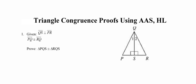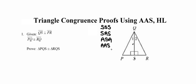Just a brief recap of our different methods for proving triangles congruent: we can prove triangles congruent by SSS (side-side-side), SAS (side-angle-side), ASA (angle-side-angle), AAS (angle-angle-side), or HL. These are the five criteria we're going to be looking to meet if we want to establish that triangles are congruent to one another.